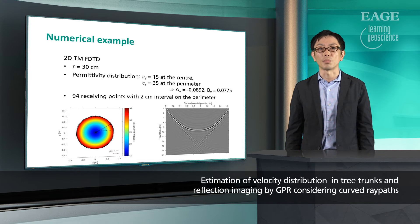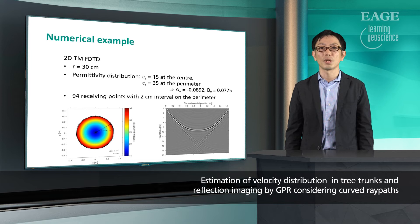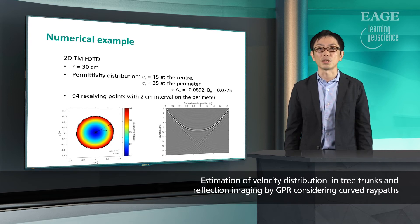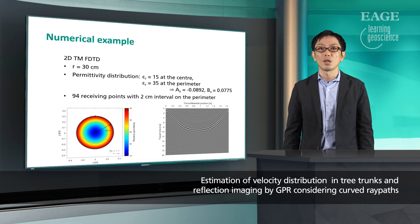Now let me show you how the method works with simulated data. I simulated radar data using two-dimensional finite difference time domain method, and a tree trunk with 30 cm radius is modeled. In the simulation, permittivity is set to 15 at the center and 35 at the perimeter, which leads to these values of the parameters A and B of our velocity model. Transmission measurement is simulated with 94 receiving positions, and the data shown in the figure on the right are obtained.